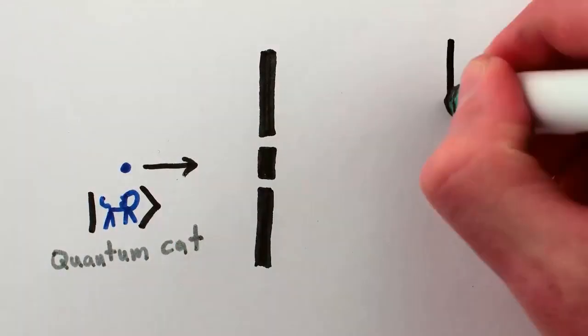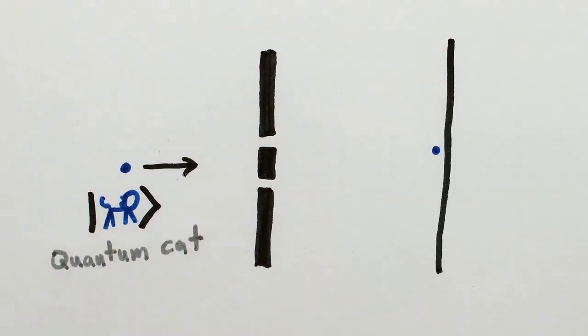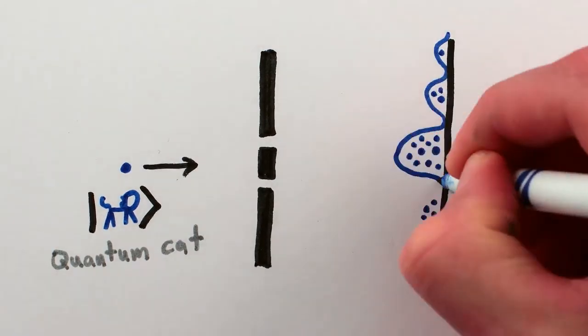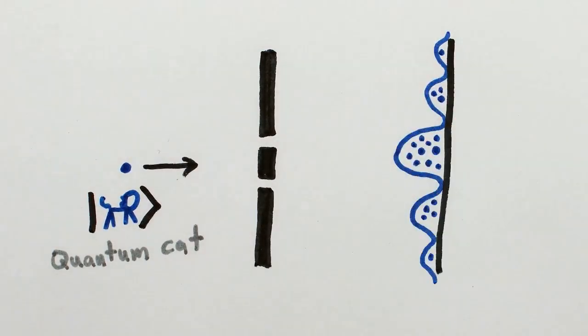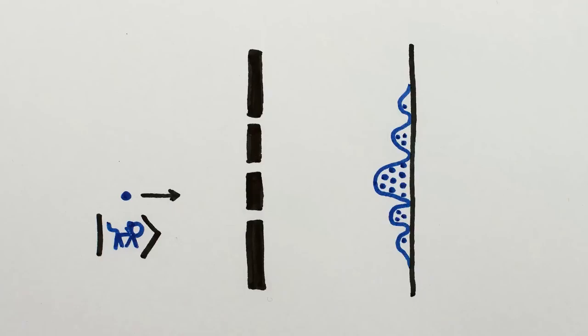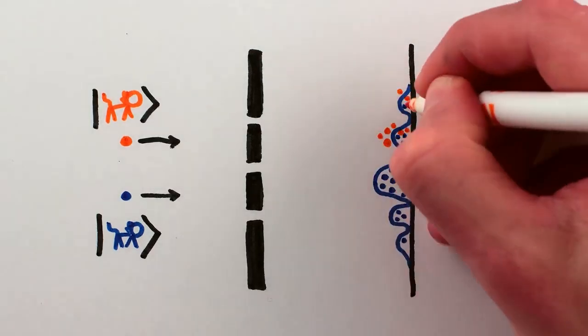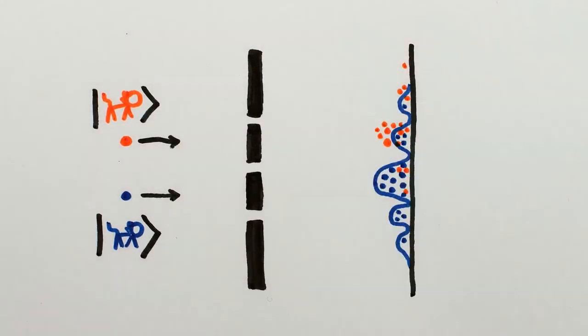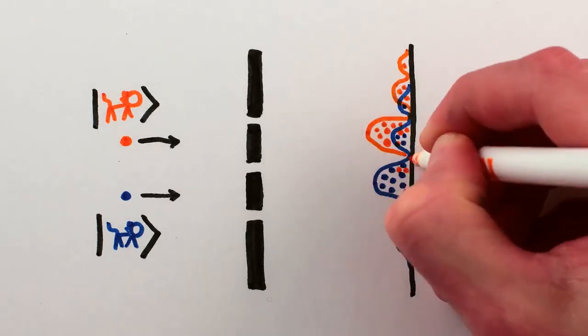Send a cat towards the slits and it'll show up at a point on the wall. Send a bunch of cats and their accumulation reveals the same interference pattern as a light wave. Now, imagine you add another competing double slit experiment with another cat that shares one of the slits with the first setup. If you send the second cat over and over towards these slits, the points where it hits the wall will give a similar interference pattern.